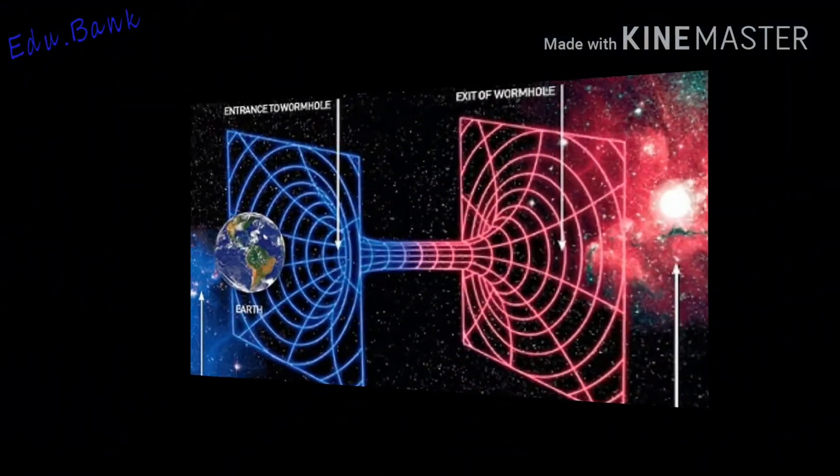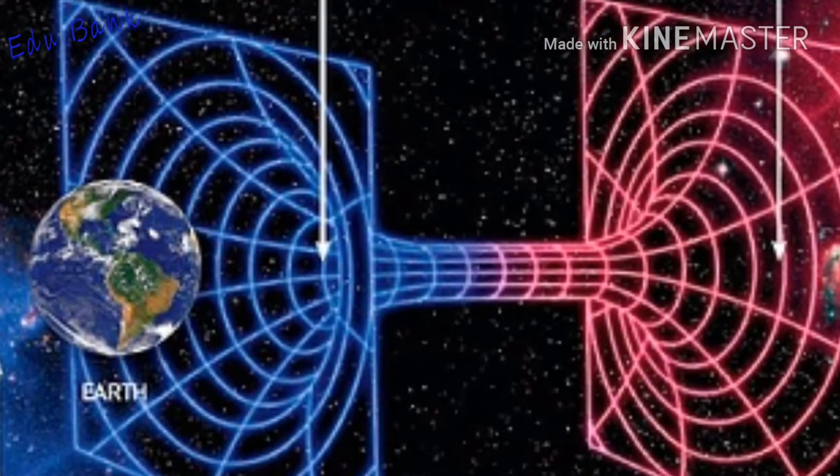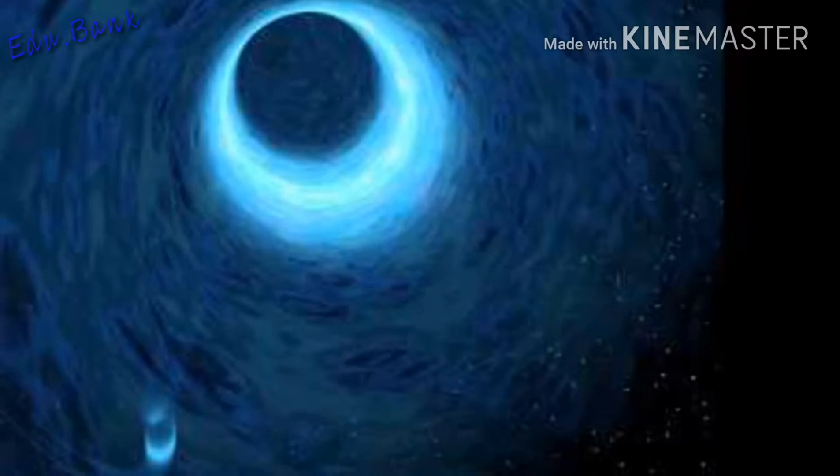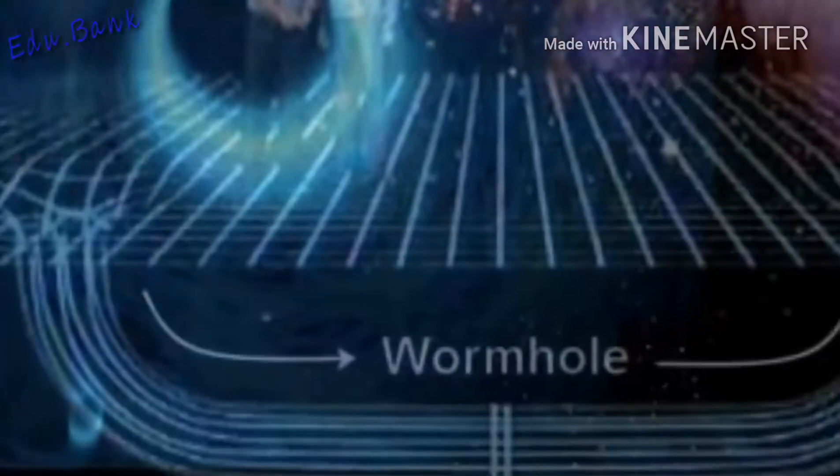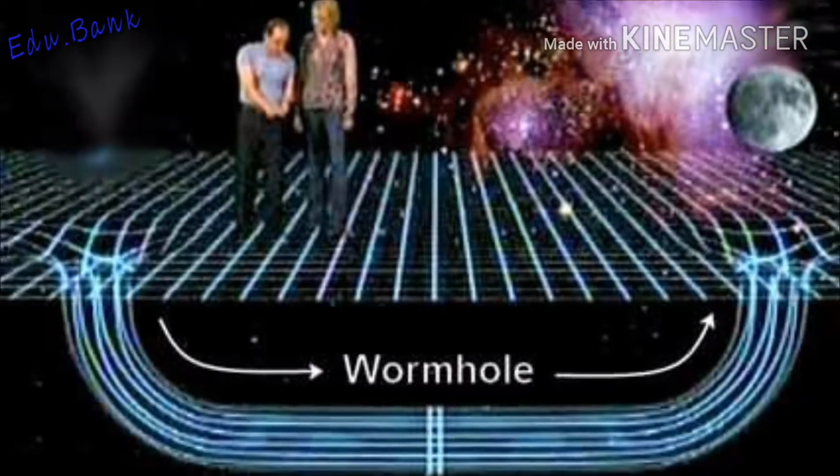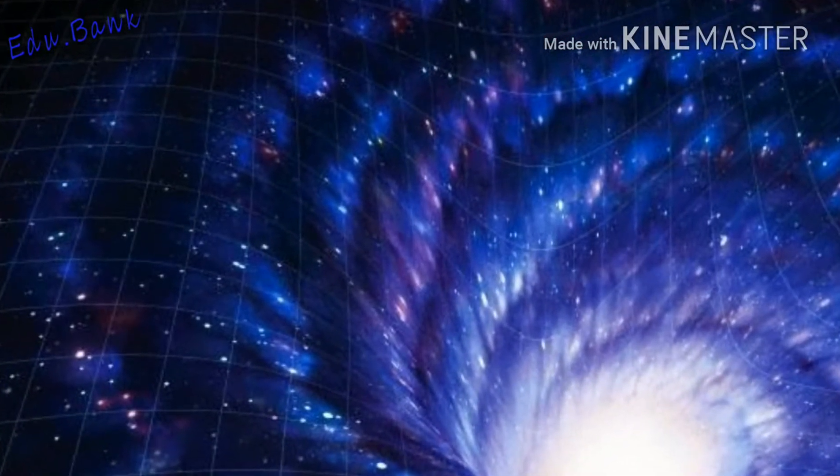Einstein's general theory of relativity allows for the existence of wormholes since it states that any mass curves spacetime. To understand this curvature, think about two people holding a bed sheet up and stretching it tight. If one person were to place a baseball on the bed sheet, the weight of the baseball would roll to the middle of the sheet and cause the sheet to curve at that point.